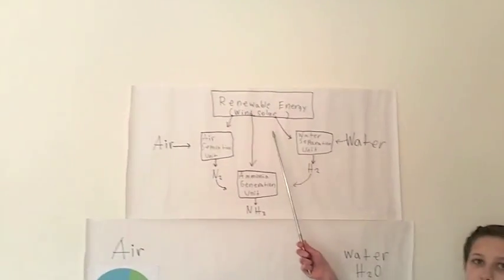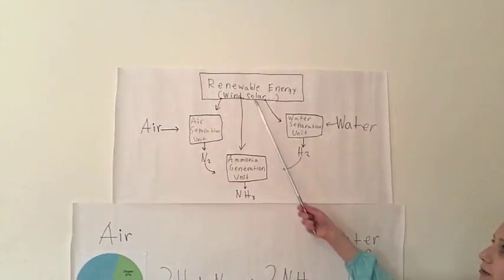This top chart shows a process of generating ammonia using renewable energy.